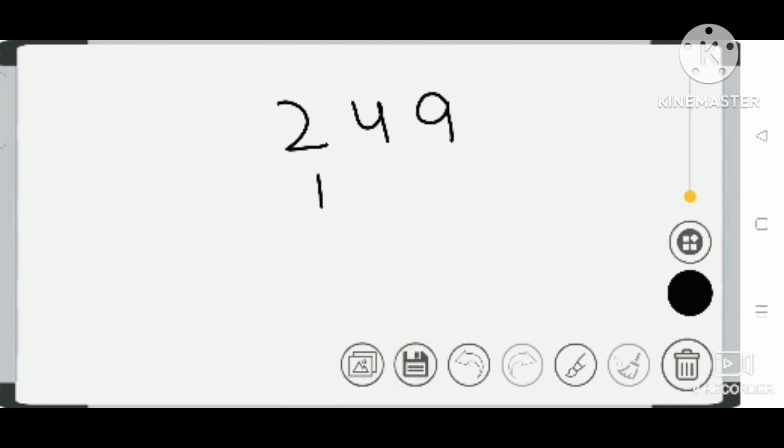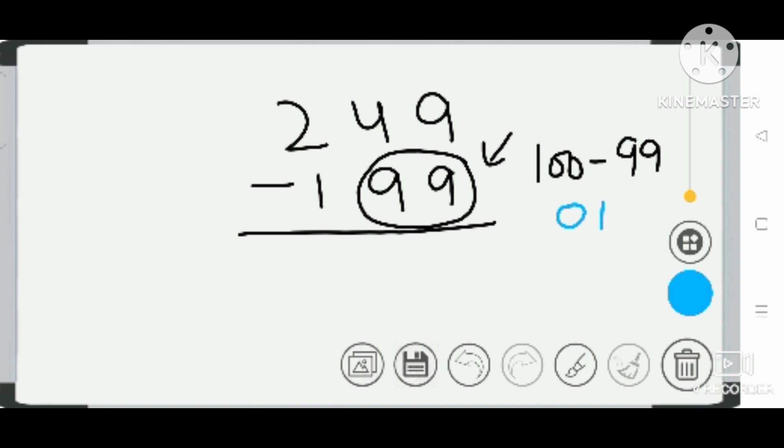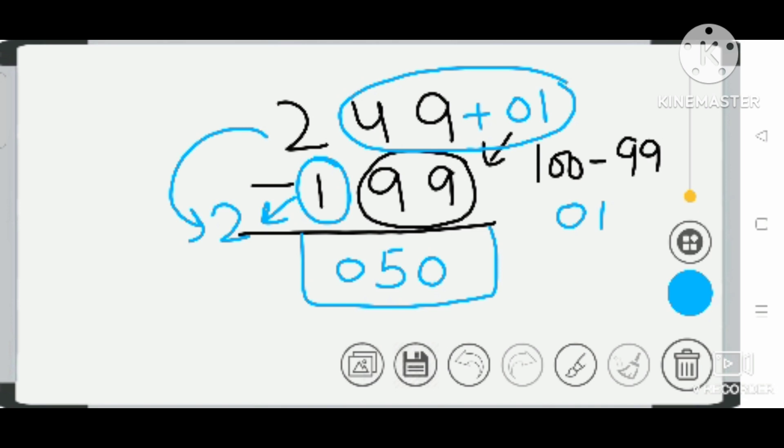What you do is see the last two-digit number of the subtrahend. Here the number is 99. The base of 99 is 100. Subtract 99 from 100 to get 01. Add 01 to this number - you get 50. Now take the successor of this number. Successor of 1 is 2. Subtract from 2: 2 minus 2 is 0. The answer is 50.